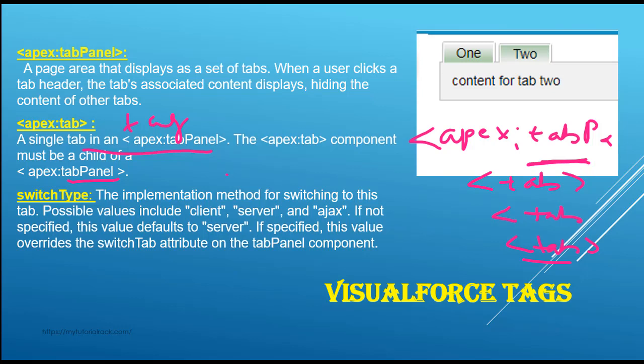The tab component has an attribute called the switchType, and if you do not provide the value of the switchType, the default value is server. This is the implementation method for switching to a tab — whenever you switch between tabs. The possible values of this attribute can be client, server, or Ajax. The default value for this attribute is server.